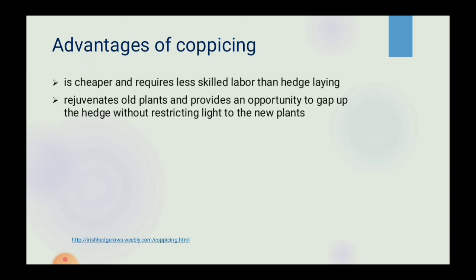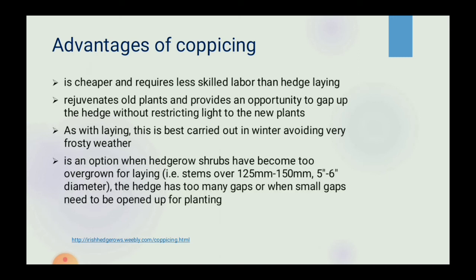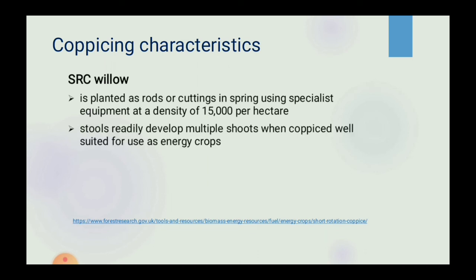Advantages of coppicing: it is cheaper and requires less skilled labour than hedge laying. It rejuvenates old plants and provides an opportunity to fill gaps in the hedge without restricting light to new plants. Best carried out in winter, avoiding very frosty weather. It is an option when hedgerow shrubs have become too overgrown for laying, i.e. stems over 125–150 mm (5–6 inches) in diameter, or when the hedge has too many gaps. SRC Willow is planted as rods or cuttings in spring using special equipment at a density of 15,000 per hectare. The stools readily develop multiple shoots when coppiced, making them well suited for use as energy crops.